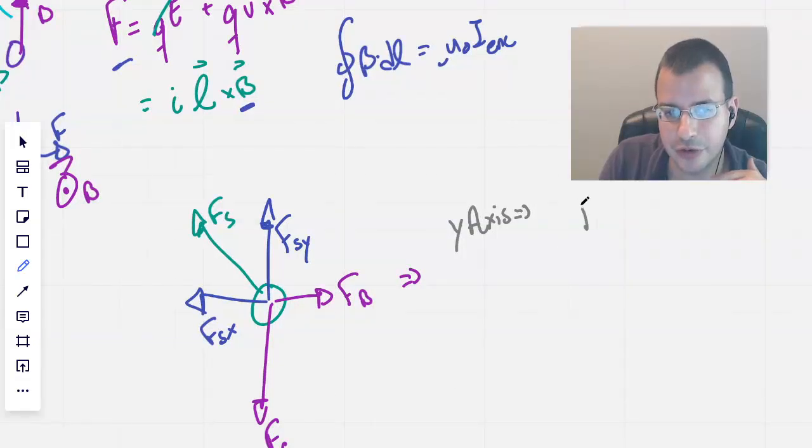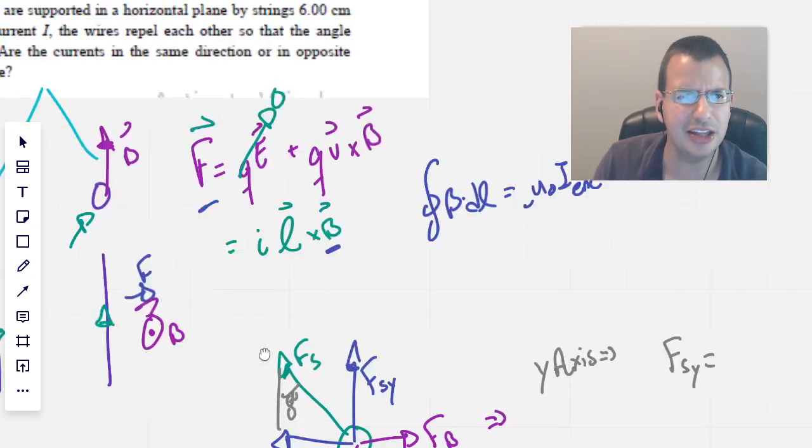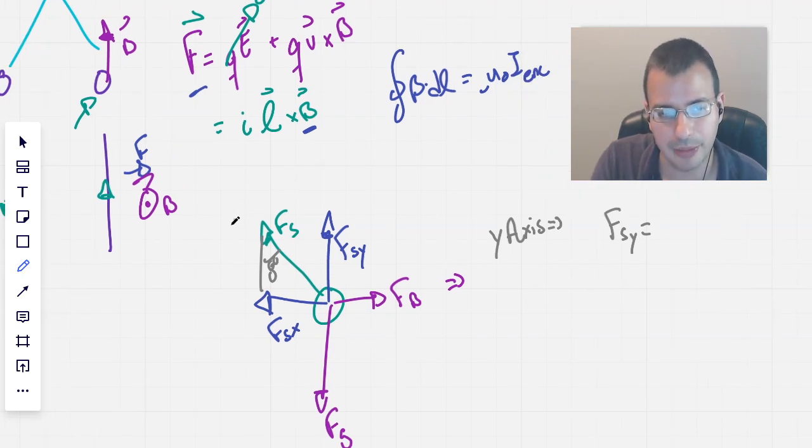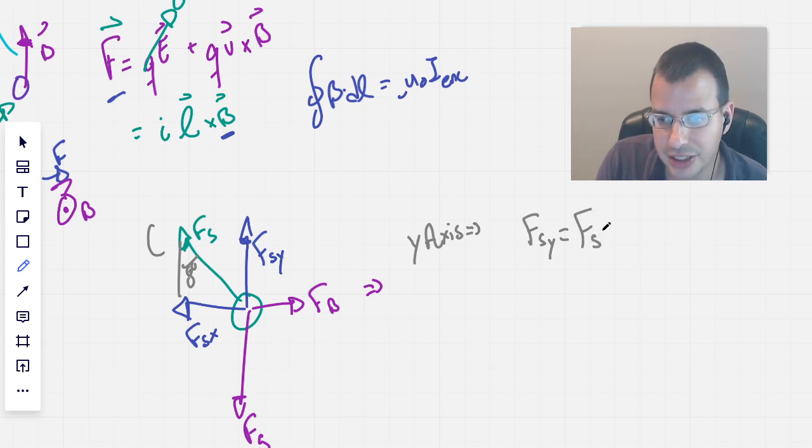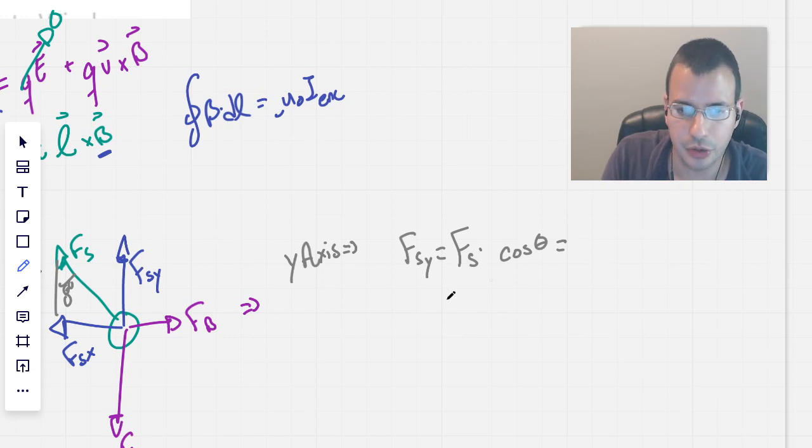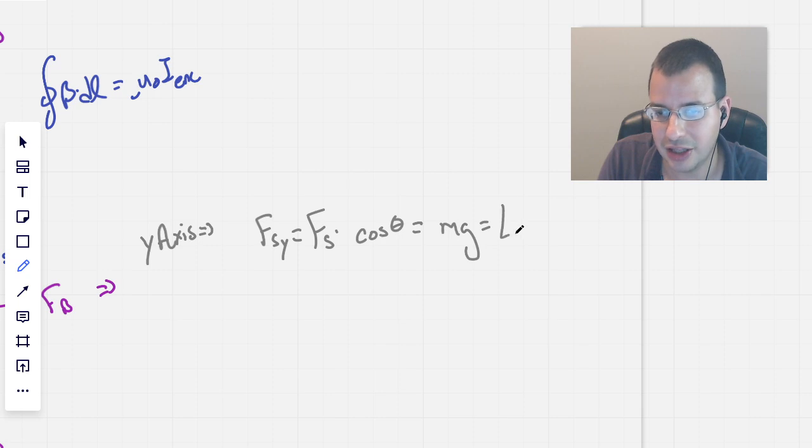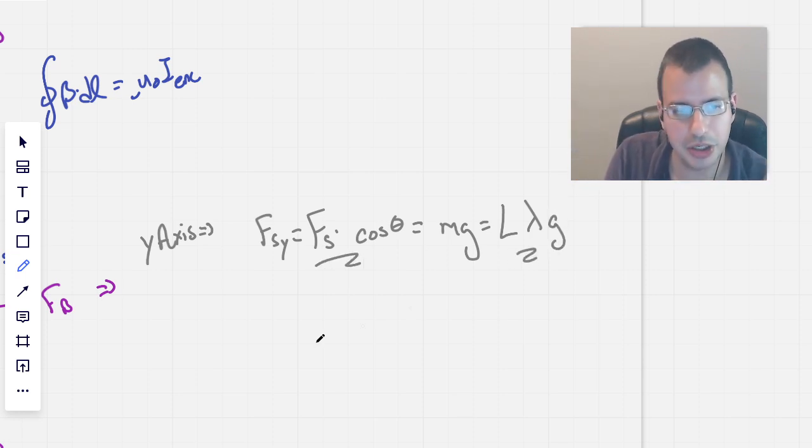So we'll start with the y axis, y direction. So then we have force string y, which we look at this, we know what this angle is right here. That's going to be eight degrees, because it's 16 degrees total. So the midpoint will be eight. So if we want this y component over here, that'll be force string times cosine of theta, which will be mass times gravity, equal this part right there. But since we're given a linear density, 40 grams per meter, the total mass will be the length of our total wire times linear density, density based on length as opposed to volume, times gravity. So we've got this equation, we've got that equation.